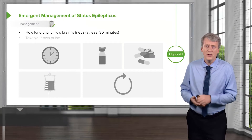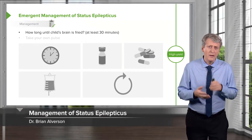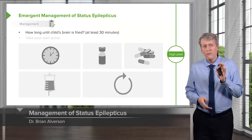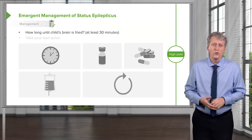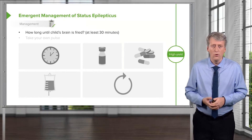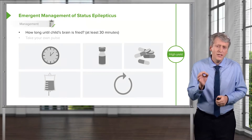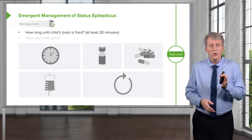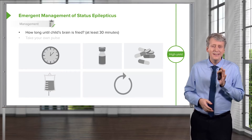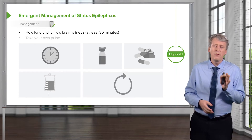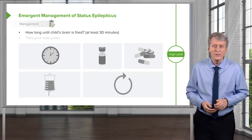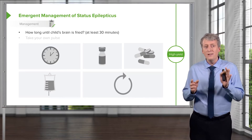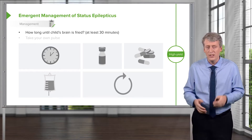If you see a patient who you suspect is having a seizure, what do you do? Well, the first thing we have to remember is how much time has been going on. It's key to ask the question: when did this start? Remember, it takes at least 35, probably 45 minutes before a baby or a child is going to have brain damage from continuous seizing.